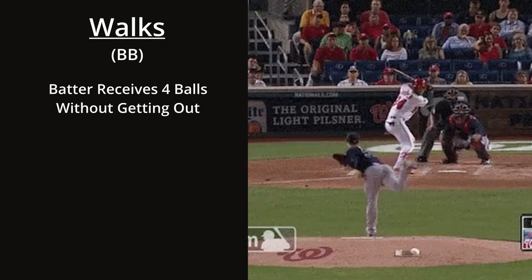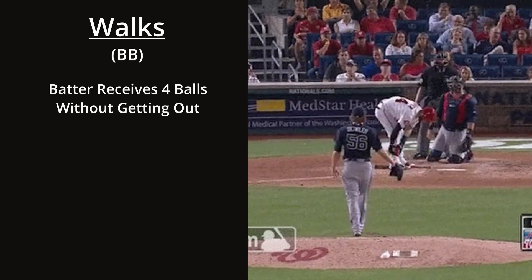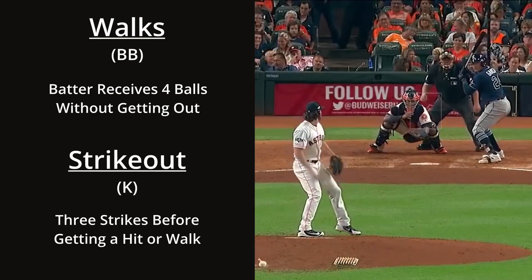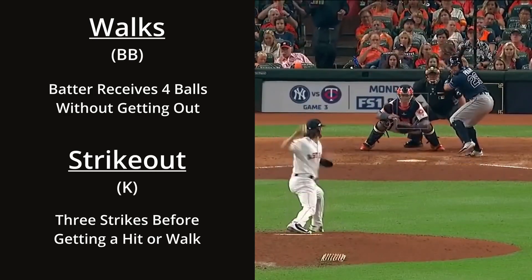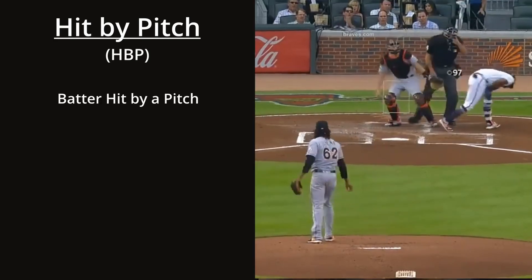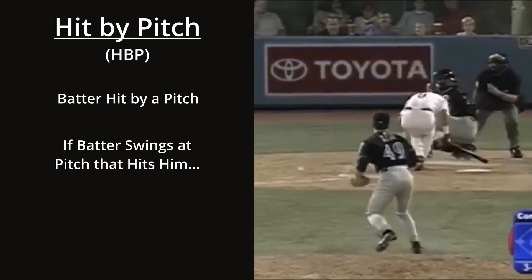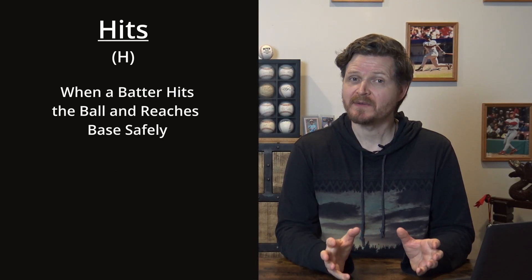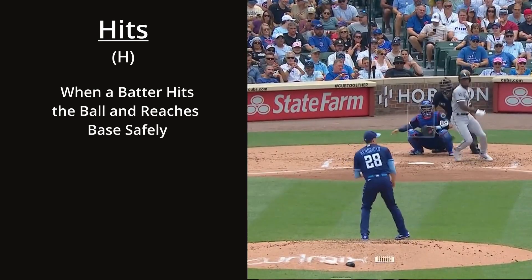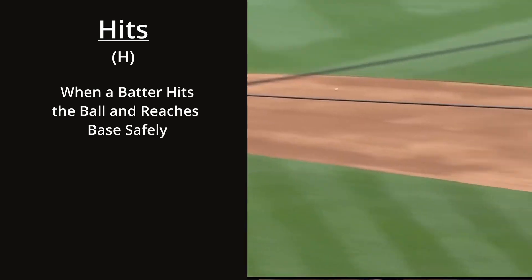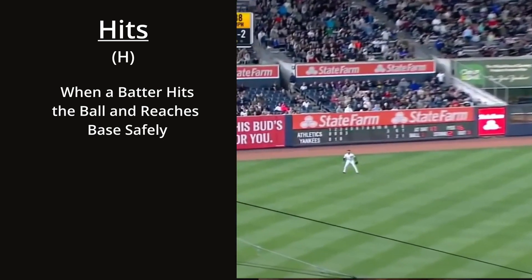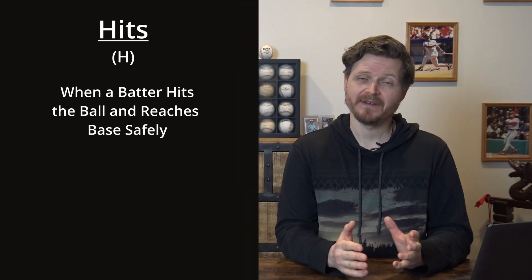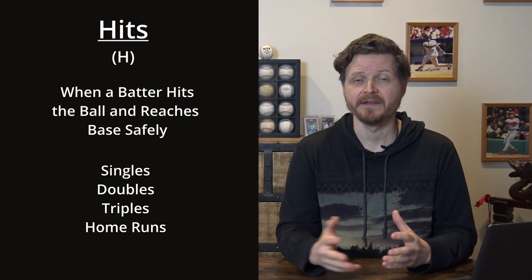Now we have counting stats all about what resulted from that plate appearance. Walks happen every time a batter receives four balls without the pitcher getting him out. A strikeout is when a batter receives three strikes in one plate appearance, either with or without swinging. Hit by pitch is counted when a batter is hit by a pitch — if the batter swings at a pitch that hits him, it's a strike, not a hit by pitch. Hits are counted whenever a batter hits the ball and gets on base safely.